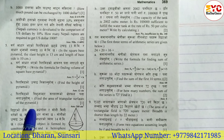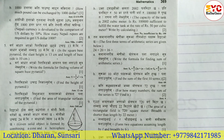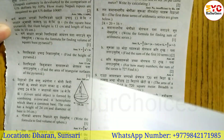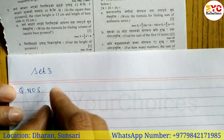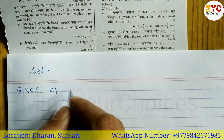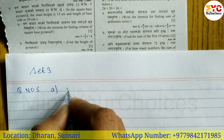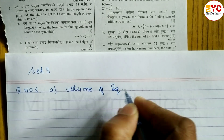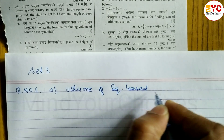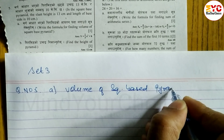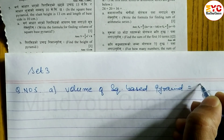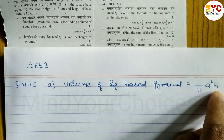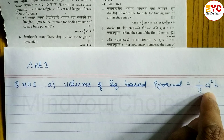Let's start from question Number A. Here we have to just write the formula for volume. The volume of a square base pyramid is equal to one-third A squared into H, that is one-third times area of base times height.